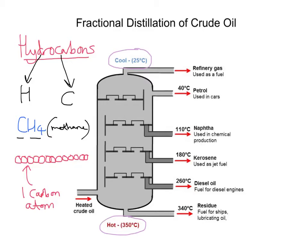Let's talk about what we actually get from this crude oil. At the bottom, at 340 degrees, we're left with a chunk of residue. That residue can be used for fuel for ships and lubricating oil. But a significant portion of that residue is called bitumen, and that can be used for roads and roofs. Above that, at 260 degrees, we have diesel oil that can be used for diesel engines.